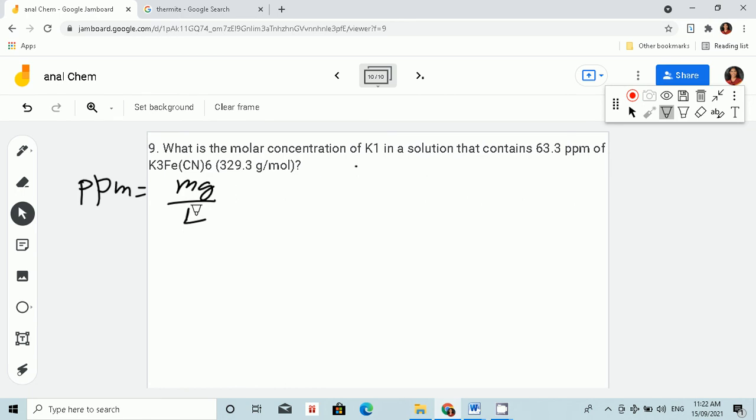Now this time, we are asked of molar concentration. So let's use this. We are given with 63.3 milligrams per liter times - this is potassium ferricyanide, K3Fe(CN)6.